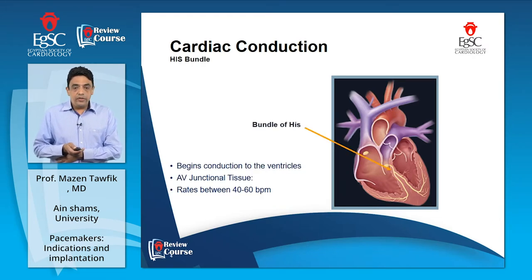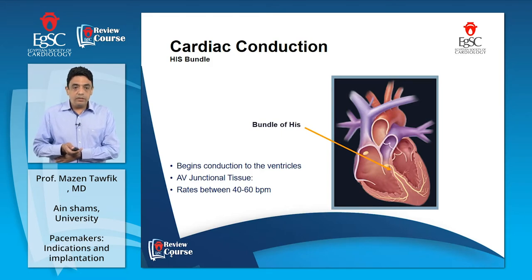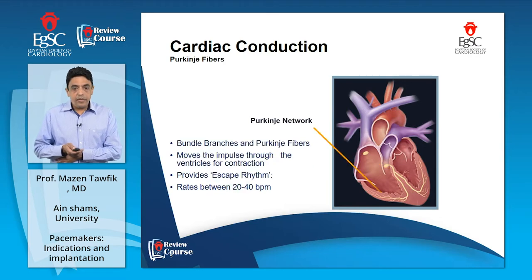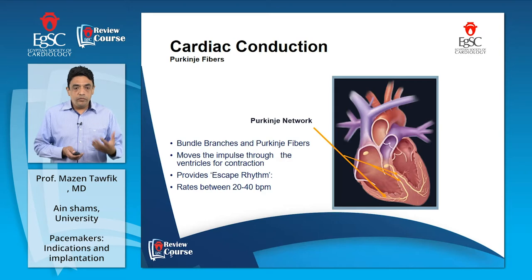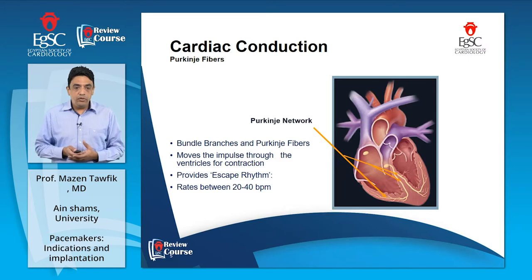The bundle of His, the AV bundle, begins conduction to the ventricle at the AV junctional tissue before division into the left bundle branch and right bundle branch. It acts as backup pacing in case of failure of both the SA node and AV node at a rate of 40 to 60 beats per minute. Then the Purkinje network of fibers, after bundle branching, moves impulses through the ventricles for contraction — what we call electromechanical coupling.